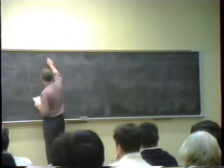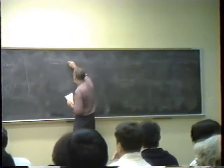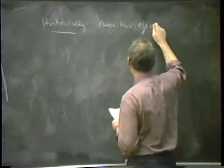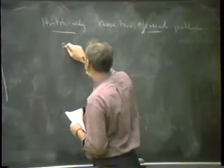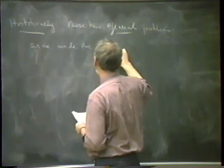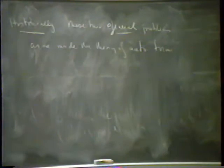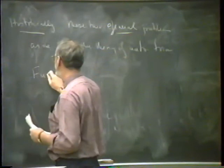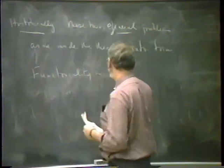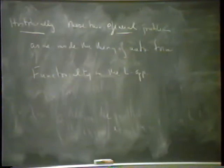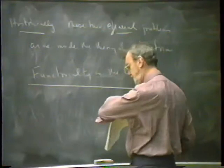Historically, these problems arose inside the theory of automorphic forms. This general problem one can call functoriality in the L-group, and I'd like to explain that. The advantage of the more general problem is that one can solve it in more cases. Let me give you some examples of L-groups for classical groups. I'm going to move away from GL_n and consider an arbitrary reductive group over a number field.